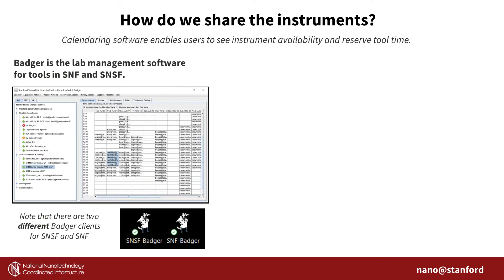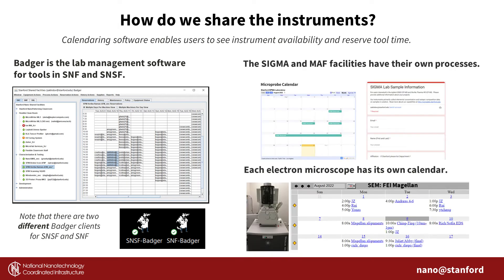To enable several hundred users to share Stanford's tools, we use calendaring systems. The primary calendaring software for SNF and SNSF is called Badger, and SNF and SNSF each have their own Badger client. Please note that SGMA, MAF, and Electron Microscopes have their own calendars.